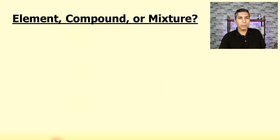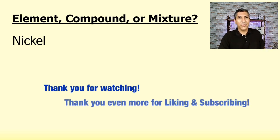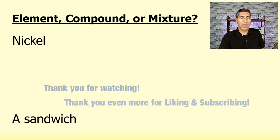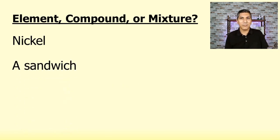Let's practice. So let's see if it's an element, a compound, or mixture. So the first example is nickel. Well, if you know anything about the periodic table, you know that that's an element, isn't it? It's one of those elements that's up there on the table. It has a symbol. Its symbol is Ni. How about a sandwich? Well, that's a mixture, isn't it? It's a heterogeneous mixture too, because you can see the different parts of the sandwich with the naked eye.